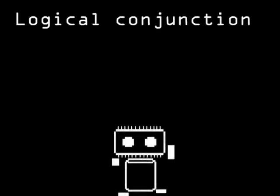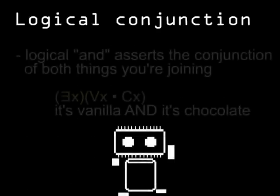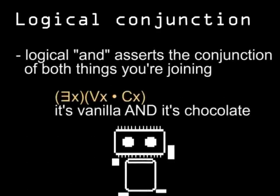The meaning of logical AND is pretty strong — it asserts both things being joined. So 'it's vanilla AND chocolate' means it's both vanilla AND chocolate. It's not the weak AND of 'you can choose between vanilla AND chocolate,' where you actually mean OR.